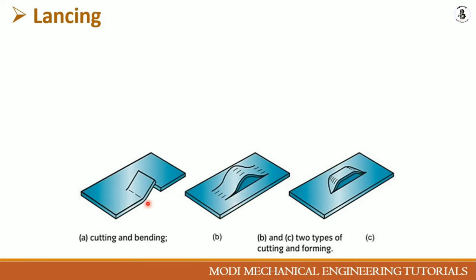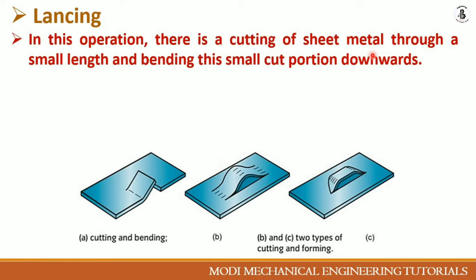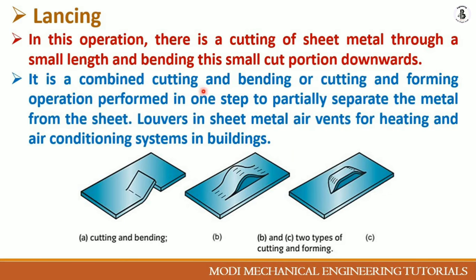Lancing operations perform a combination of operations on sheet metals — cutting and bending, or cutting and forming, in one step. In lancing, the sheet metal is cut through a small length and the small cut portion is bent downward. This combination of cutting and forming partially separates the material from the sheet. Applications include air vents for heating, cooling, and air conditioning systems in buildings.